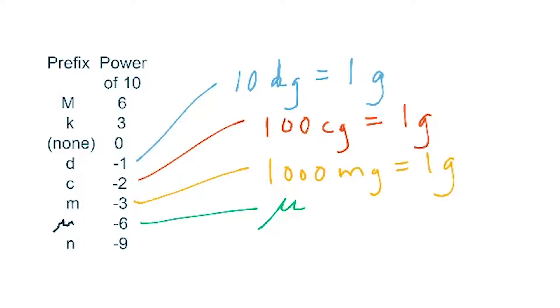And the prefix nano? Well, nano looks just like 9, except the vowels are different.